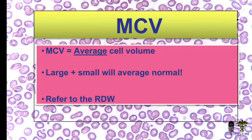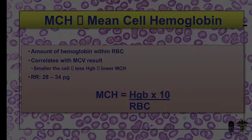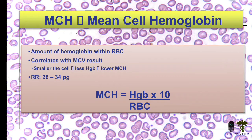These cases can be differentiated on the basis of different parameters. MCV is the average cell volume — large versus small versus average normal — and it refers to the RDW. MCH is another RBC index: the amount of hemoglobin within the RBC. There is a slight difference between MCH and MCV — MCH correlates with the MCV result.